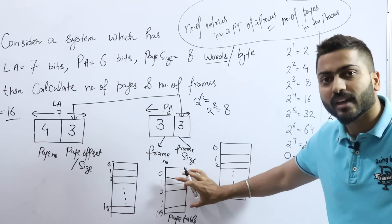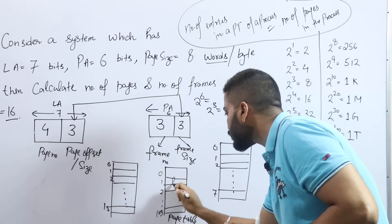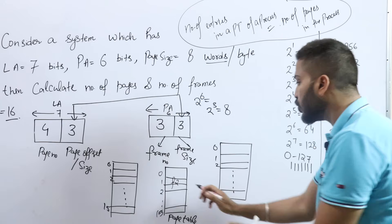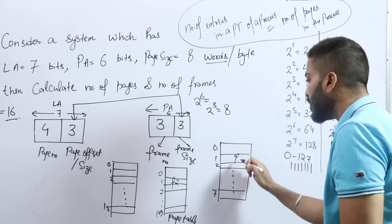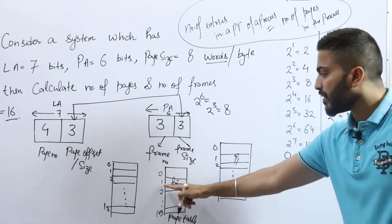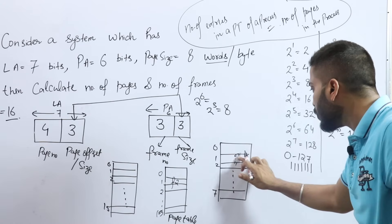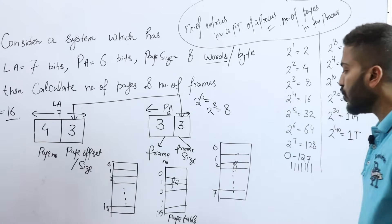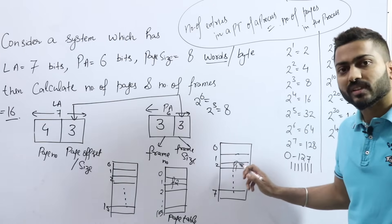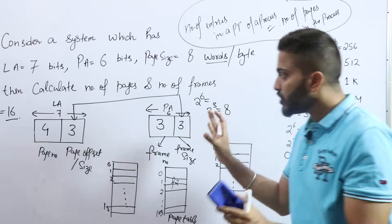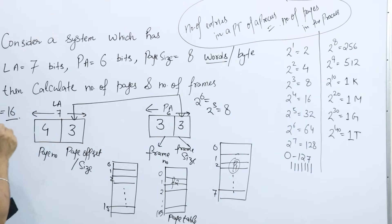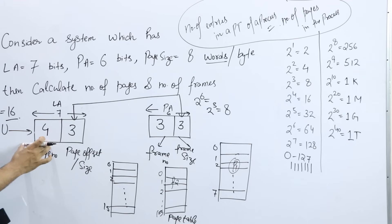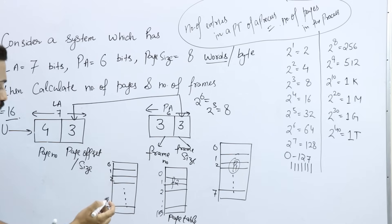Inside the page table, we store the frame number. For example, if page number 1 (P1) is stored in frame number 2, then the page table entry for page 1 will contain frame number 2. This is how we represent the structure of the page table — each page maps to a corresponding frame.